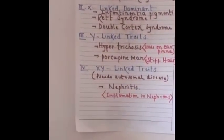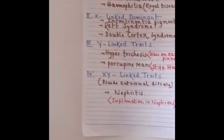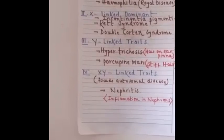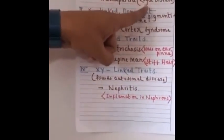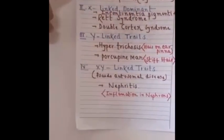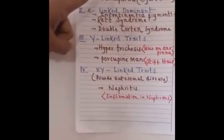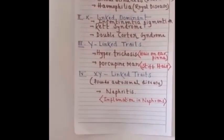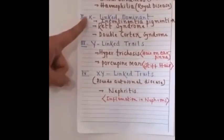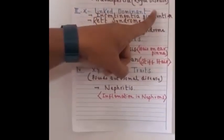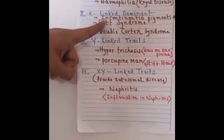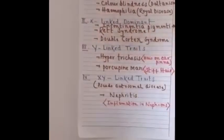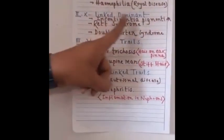Hemophilia is also called royal disease or bleeders disease. These are the best examples for X-linked recessive traits.